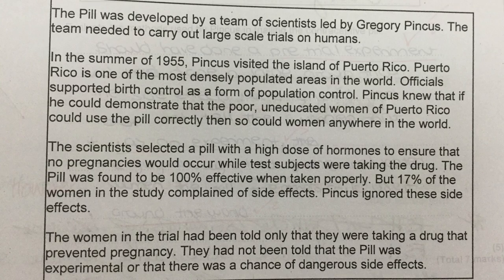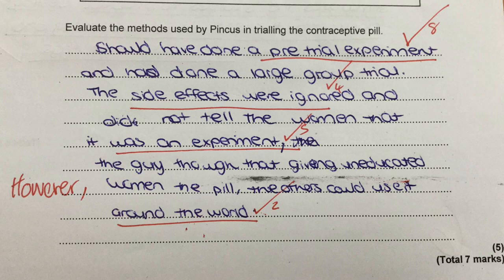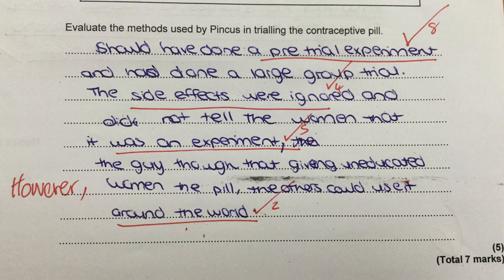Let's have a look at some student responses. This student, for the first few sentences where she talks about a pre-trial experiment, the side effects, and not telling the women that it was an experiment, she's preceded that with the words 'should have' — this infers that she's talking about cons, negative aspects of the trial. For the last sentence she says the guy thought that giving uneducated women the pill meant others would be able to use it around the world. It's a valid point, but she should have preceded it with the word 'however' to show that she's talking about a pro. I call this constructive marking — I've put the word in there at the front to show her how she should have done it, and I've given her the marking point.